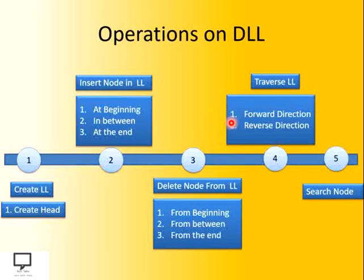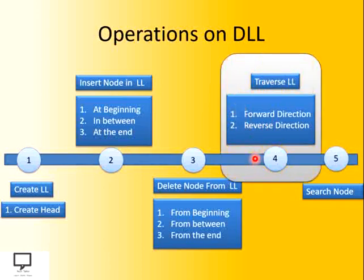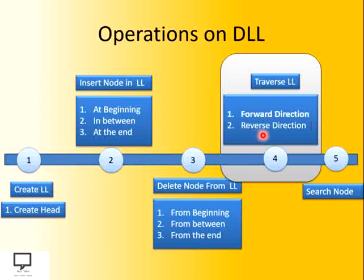Now, let's see among these different operations, we are going to focus on the traversal of a doubly linked list in forward as well as in reverse direction. First of all, let's see how to traverse it in forward direction.